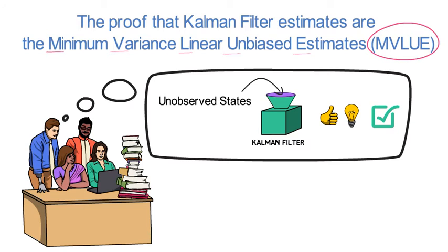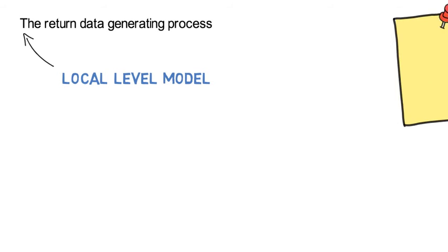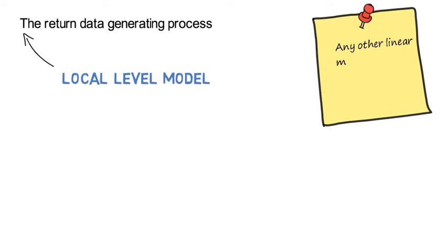The data generating process that we rely upon is the so-called local level model. Note, we could use any other linear model for that, but why make it more complicated than absolutely necessary? The data generating process of the local level model reads as follows.